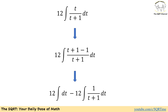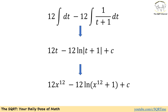Now I'm going to use a trick: what I have on the top of this fraction can be written as t plus 1 minus 1. Then t plus 1 over t plus 1 is 1, and minus 1 over t plus 1 gives us a split integral. The integral becomes 12 times the integral of dt minus 12 times the integral of 1 over t plus 1 dt.